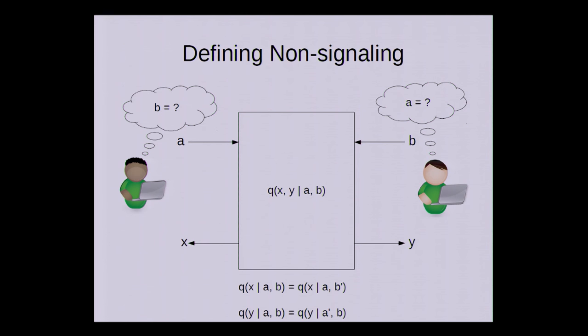More formally, that means if we take the marginal distribution of the first output variable, then it's independent of the second input variable, and vice versa for the other side. However, the output variables can be correlated in arbitrary ways.